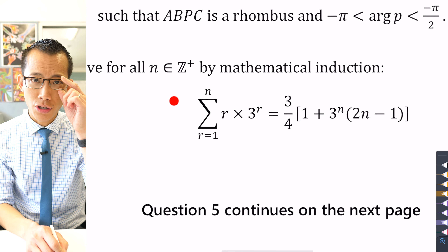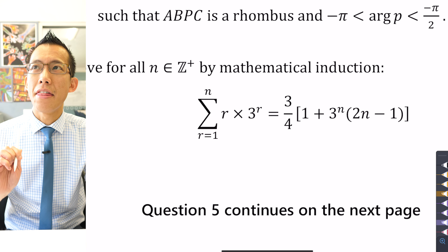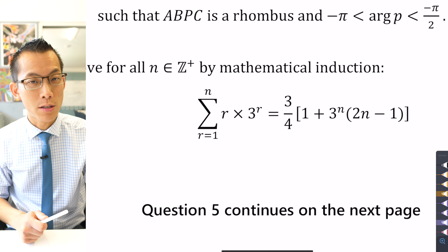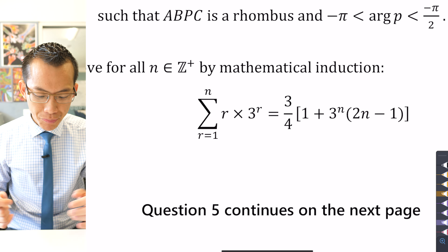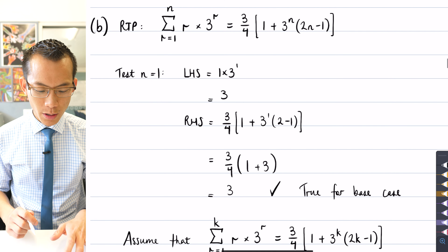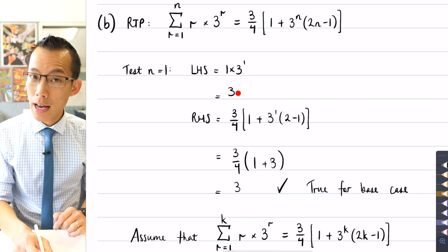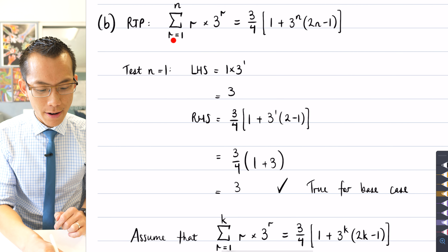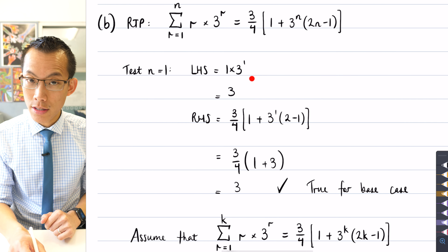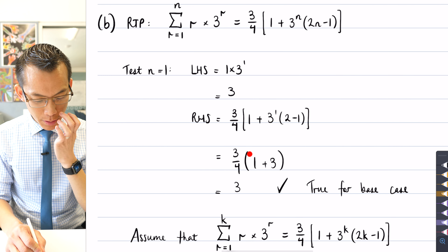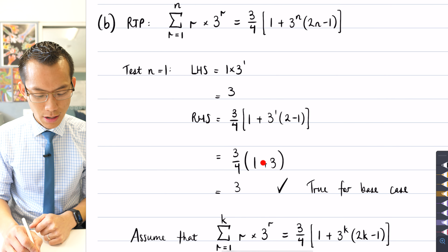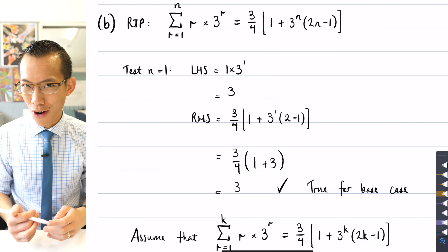In Extension 2, the base case is not always n equals 1 — that comes up later in the test. But luckily, in this particular question the first positive integer is exactly n equals 1. So we go ahead and test it. Here's the left-hand side: r starts at 1 and goes up to 1 since n equals 1. Then the right-hand side is a straightforward substitution, and you end up with 3 on both sides.